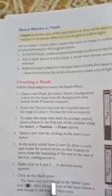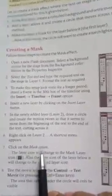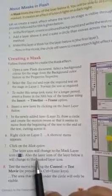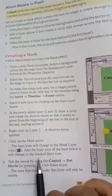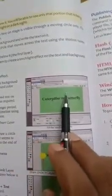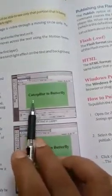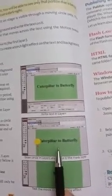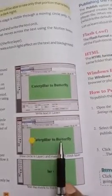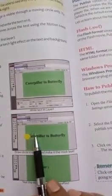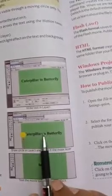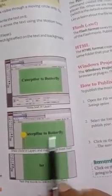Sixth, right-click on Layer 2 — a shortcut menu appears. Seventh, click on the Mask option; the layer icon will change to the mask layer icon, and the layer icon of the layer below it will also change to the masked layer icon. Eighth, test the movie using Control > Test Movie. The area that comes under the circle will only be visible. Select the background color using the Properties Inspector dialog box, type the required text using the Text Tool, and insert a frame to keep the setup static. Draw a circle and create the motion tween so it moves from the beginning to the end of the text.